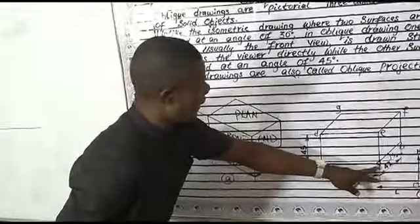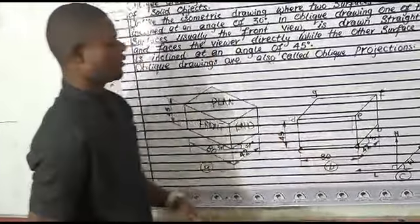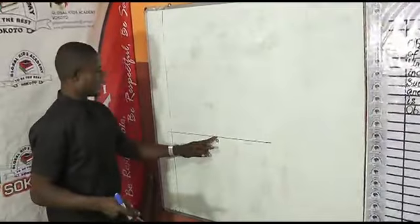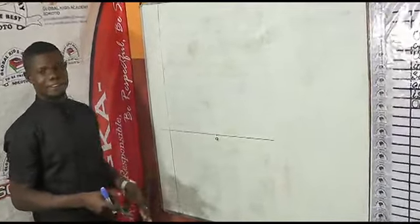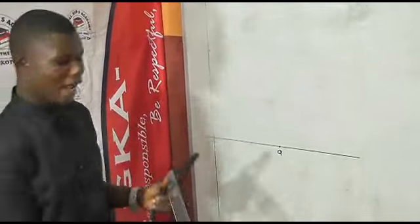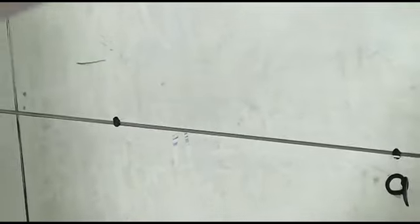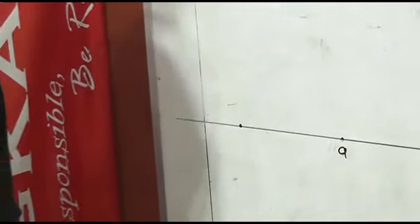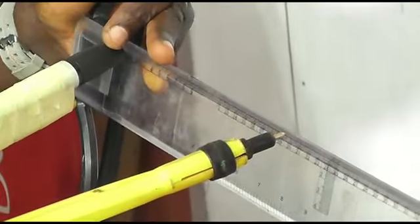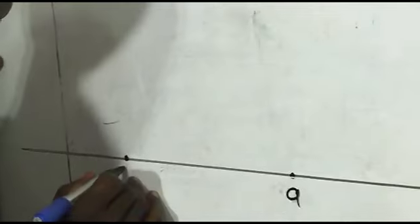We can either draw line AC, line AB, or line AE, since all lines are connected to point A. Let's draw line AC first. Since line AC is a horizontal line, all we need to do is measure 80 millimeters on the horizontal line. You pick your ruler and measure 80 millimeters — or you can use your compass, take it from 0 to 80 (that's 8 centimeters, equivalent to 80mm), then transfer it to the line. This point becomes our C.